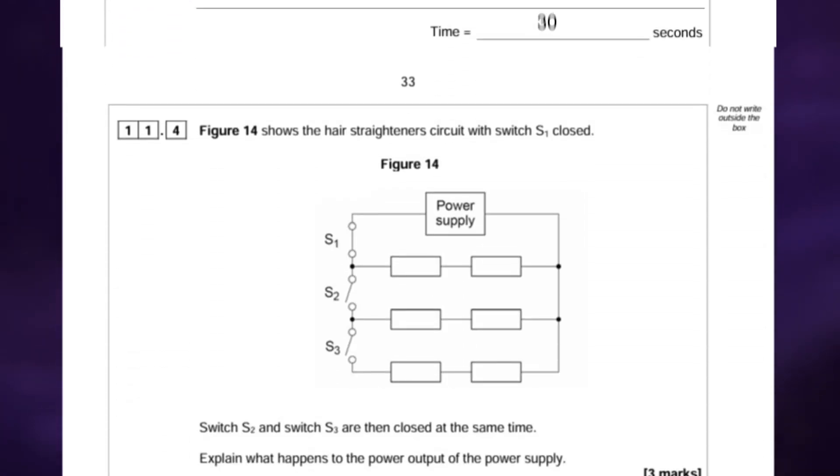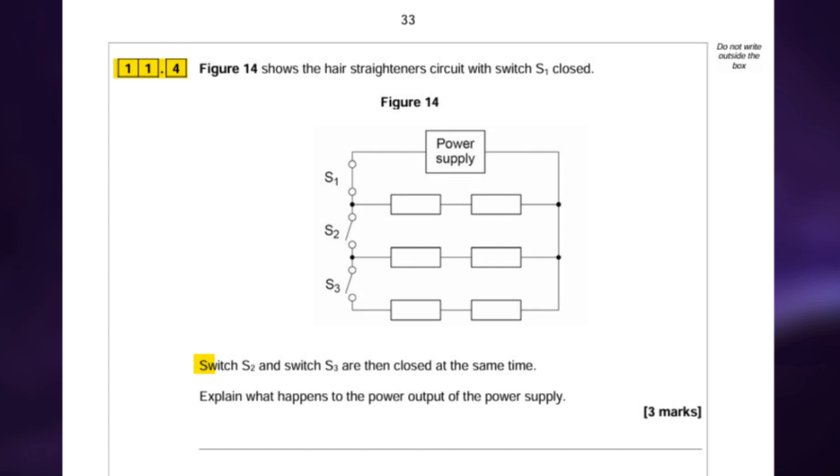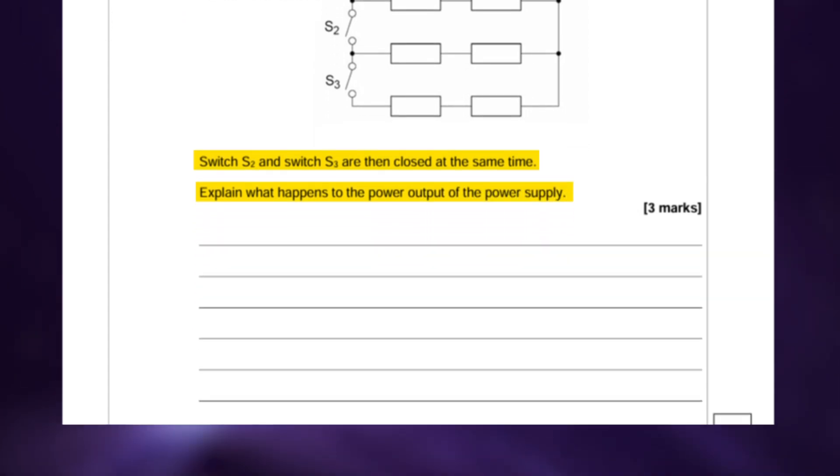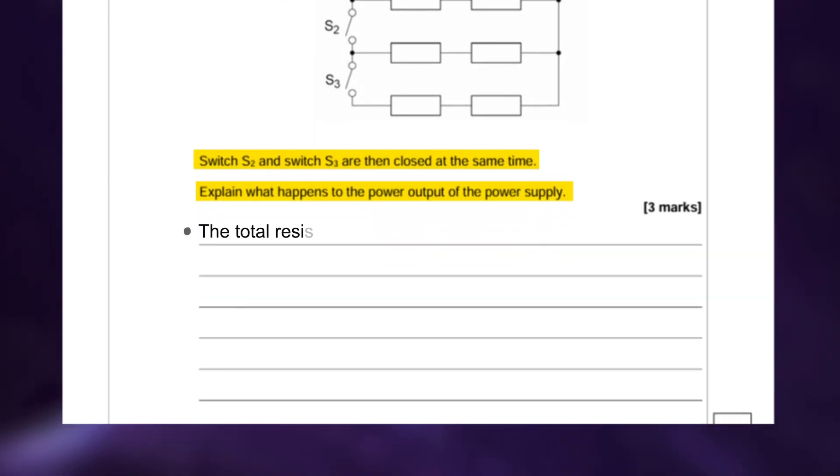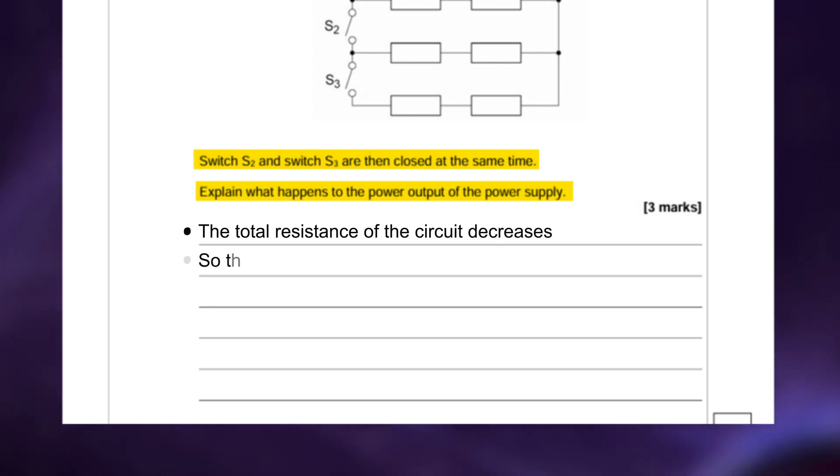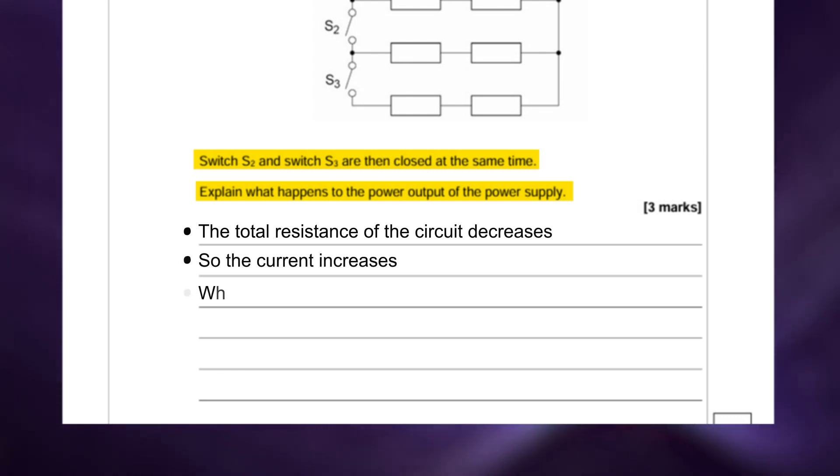And for the final part of this question, part 4, it says that switch S2 and switch S3 are then closed at the same time. Explain what happens to the power output of the power supply. Mark 1 is for saying the total resistance of the circuit decreases. Mark 2 is for explaining that this means the current increases. And the third mark is for explaining that this means there is an increase in the power output.